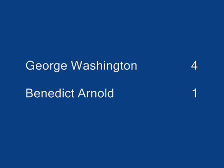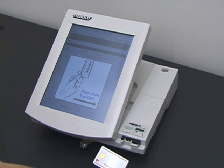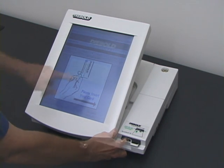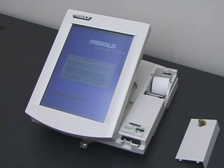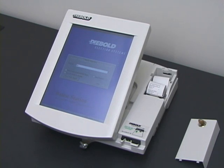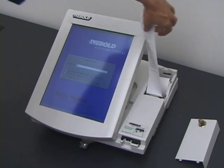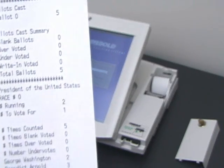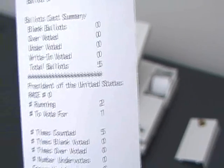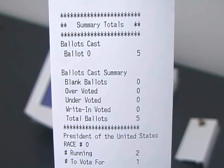The correct result for this election is George Washington four votes, Benedict Arnold one vote. Election day is now over. An election worker approaches the machine, inserts a supervisor card, and tells the machine to end the election. The machine prints out a paper tape announcing the results. The tape shows that Benedict Arnold won the election, three votes to two.